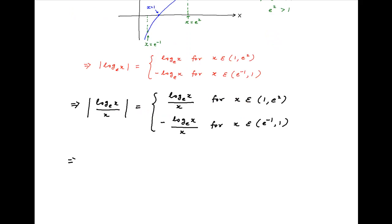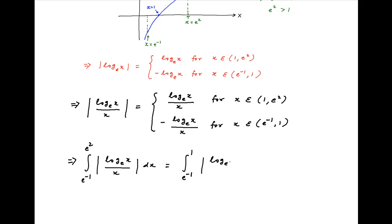The given integral can therefore be broken into two components. The first component is the integral from e raised to the power minus 1 to 1 of modulus of ln x upon x dx, and the second component is the integral from 1 to e square of modulus of ln x upon x dx.